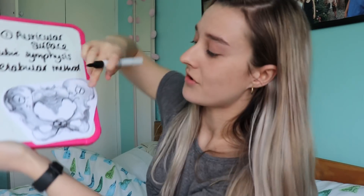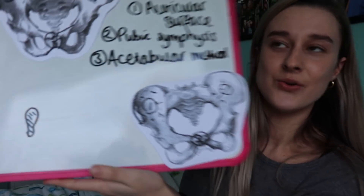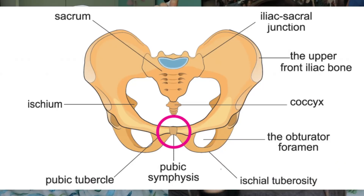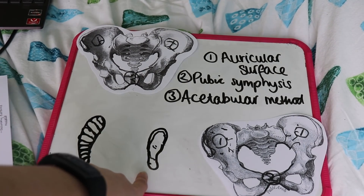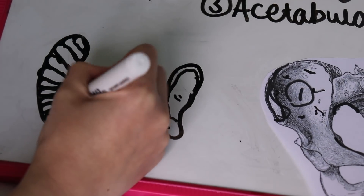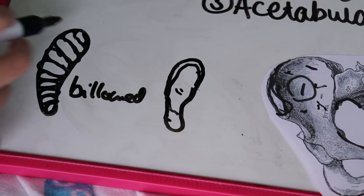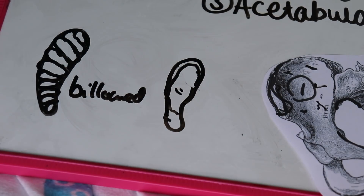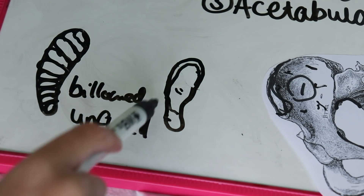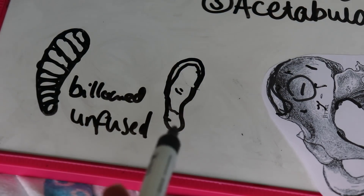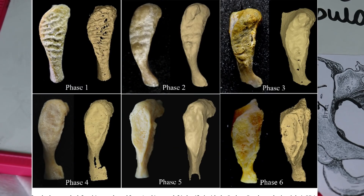The pubic symphysis — there are two, one on each side — they join together. The most accurate method is the Suchey-Brooks phases. As you get older, your pubic symphysis goes from looking billowed — a sort of texture visible on the surface — because it is unfused. With age as it fuses, the rim becomes complete and defined around the outside and the surface is no longer billowed. I'll put all of the phases on the screen so you can see them.